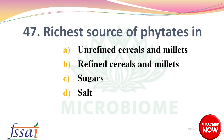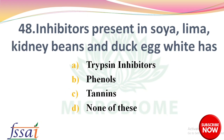Next question: a rich source of phytates is — options: unrefined cereals and millets, refined cereals and millets, sugars, salt. The right answer is option A, unrefined cereals and millets. Next, inhibitors present in soya, lima, kidney beans, and duck egg white — options: trypsin inhibitors, phenols, tannins, none of these. The right answer is option A, trypsin inhibitors.